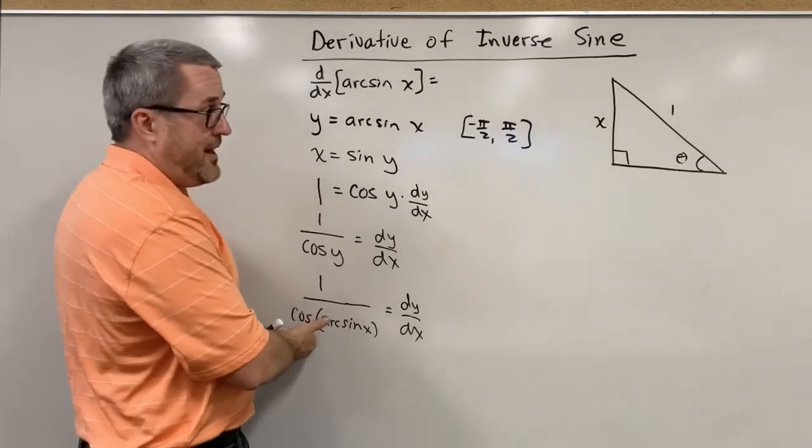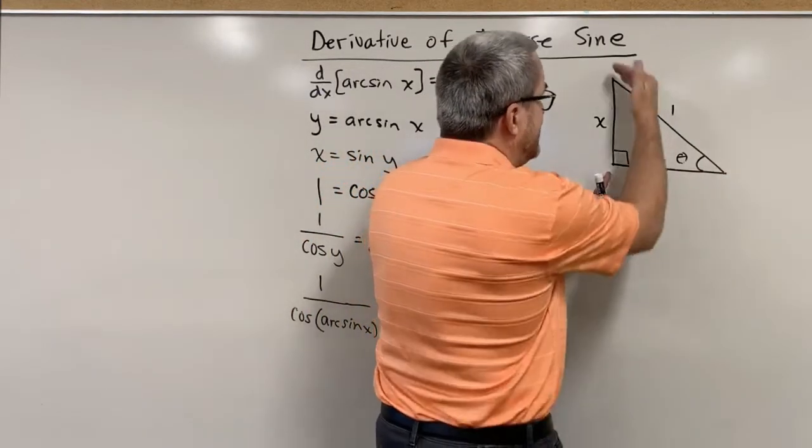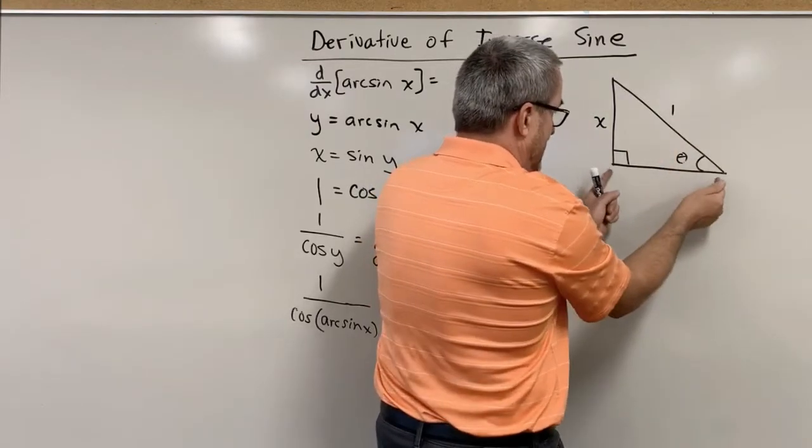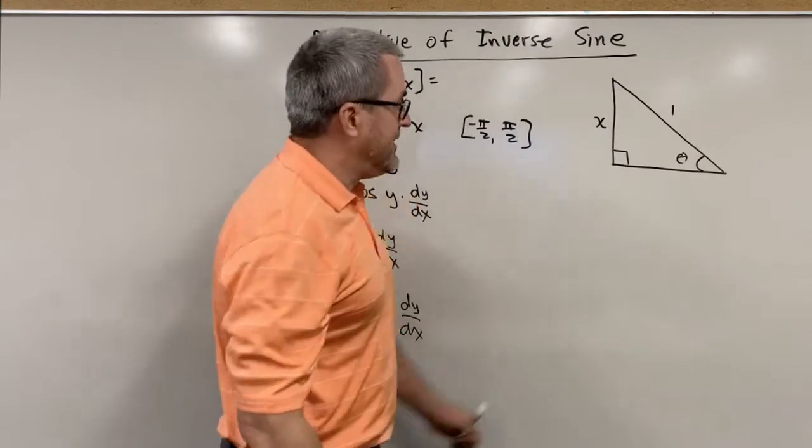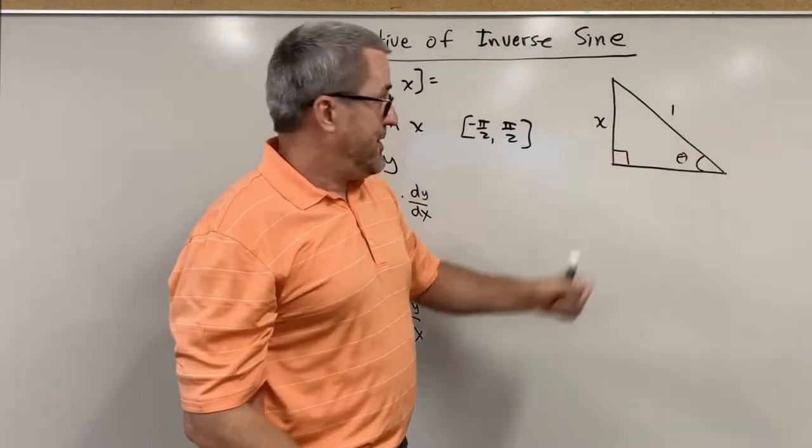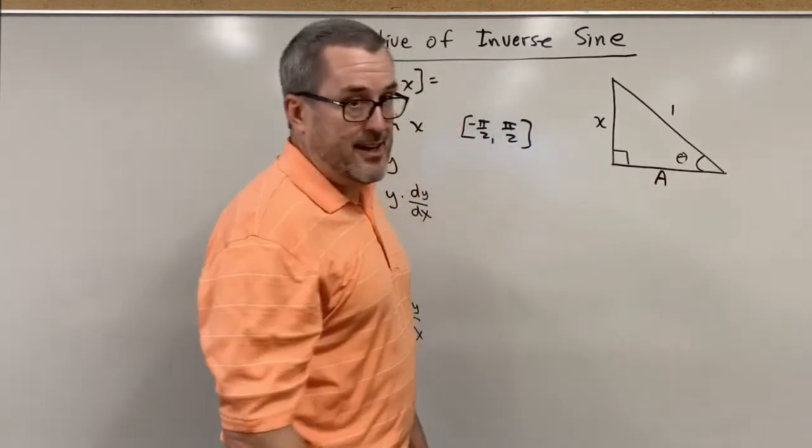We want the cosine of that angle. Cosine is the ratio of this adjacent side to the hypotenuse. So let's go find that adjacent side. Since we have a right triangle, we can use the Pythagorean theorem. Let's label this adjacent side. Let's label it A for adjacent side.